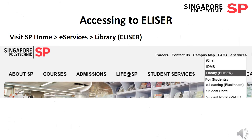ELISA is the Electronic Library Information Services and Resources of SP Library. You can access ELISA via the SP home page. Hover your mouse cursor over eServices, then select Library, ELISA, from the drop-down list.